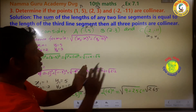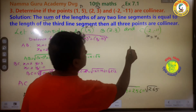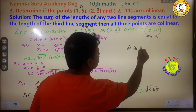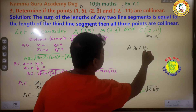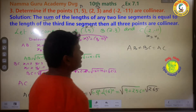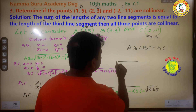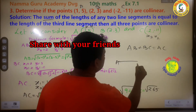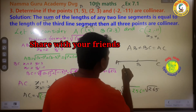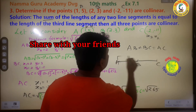Now we check collinearity: AB plus BC should equal AC. We add the distances from A to B and B to C and compare with the distance from A to C.